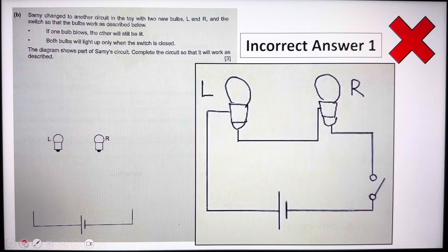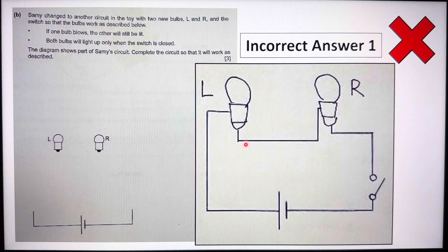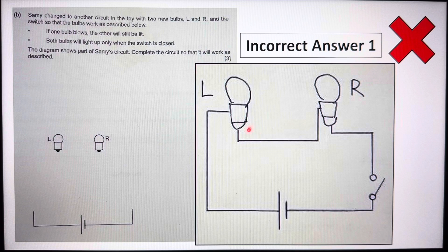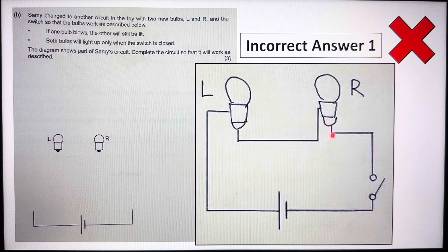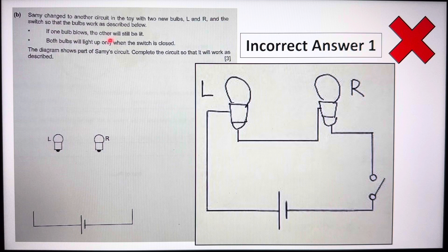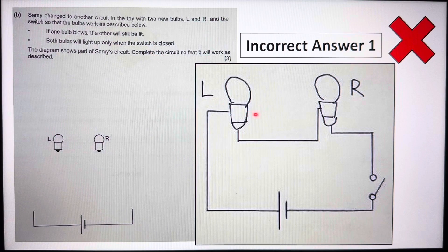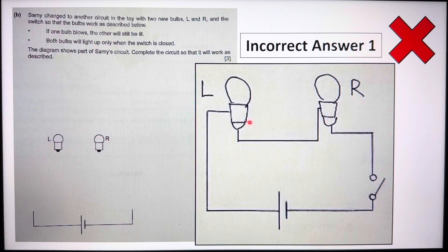Now the first wrong or incorrect answer, this is definitely not a parallel arrangement. This is in fact a series arrangement. So it says here, if one bulb blows, the other will still be lit. So if one bulb blows here, the other won't be lit anymore.